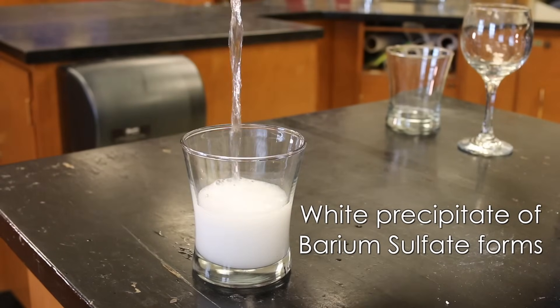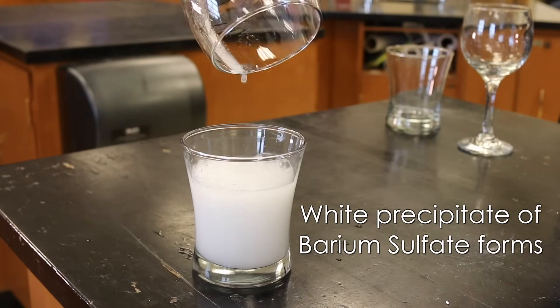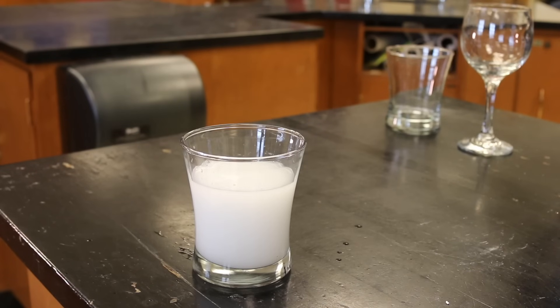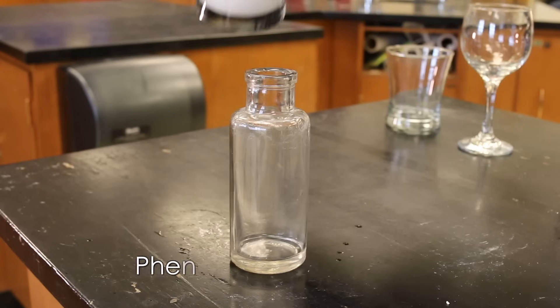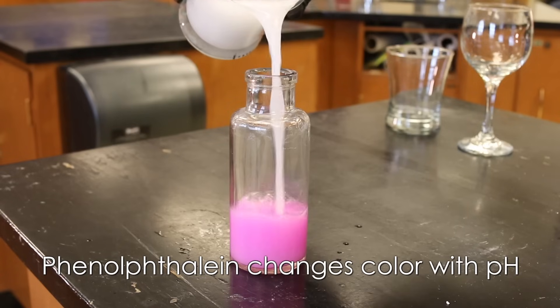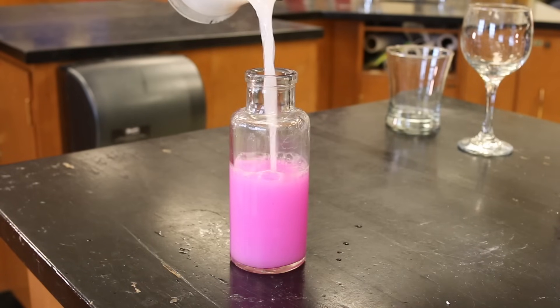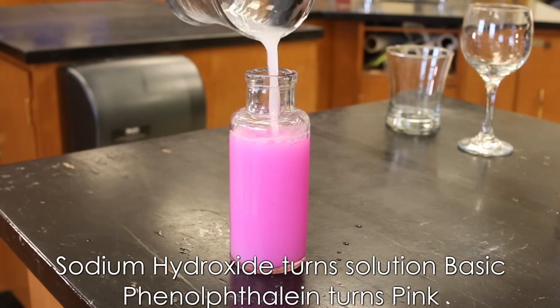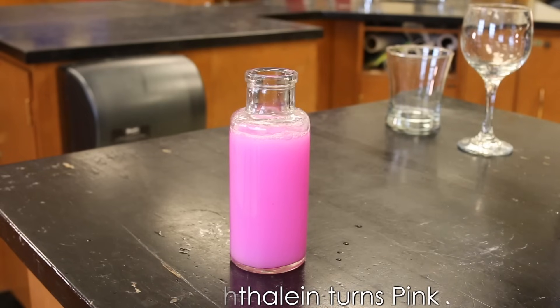The next one is making a precipitate, so it's making little chunks of barium sulfate. Those chunks are floating around and it makes it look like milk. And remember, phenolphthalein changes the color, so in this one we change the pH again back to basic, the opposite of acidic, and we get pink.